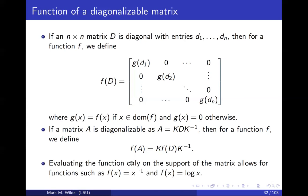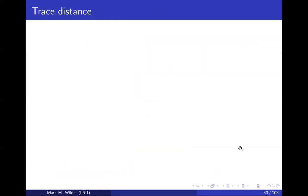So if we evaluate the function only on the support of the matrix or for the domain of the function, then we can have functions such as the inverse and the logarithm. We can have those for matrices. But let's use this for a particular function, the square root.